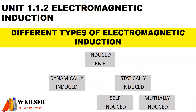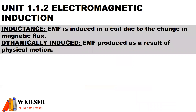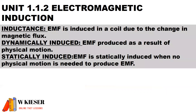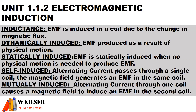Under statically induced EMF we get self-induced EMF and mutually induced EMF. For inductance definitions: EMF is induced in a coil due to the change in magnetic flux. Dynamically induced EMF is produced as a result of physical motion. Statically induced EMF requires no physical motion. Self-induced: alternating current passes through a single coil and the magnetic field generates an EMF in the same coil. Mutually induced: alternating current through one coil causes a magnetic field to induce an EMF in a second coil.